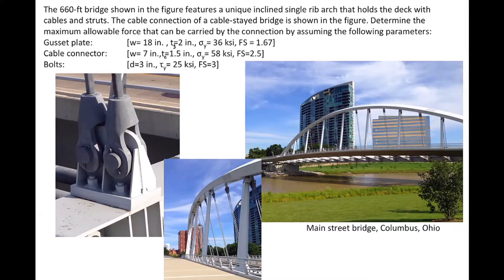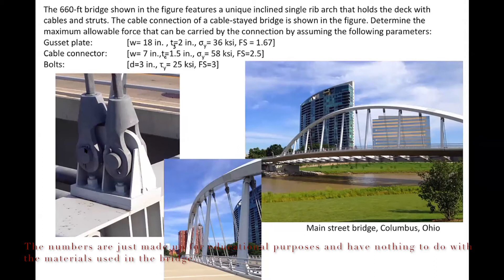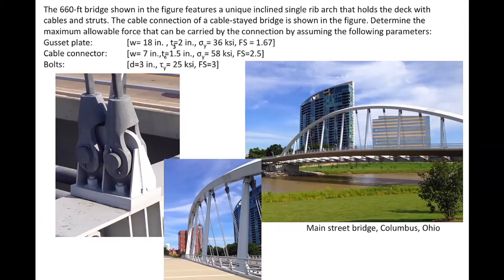Given these numbers — assuming the width of the gusset plate, the thickness, the diameter of the bolt, and some other properties are provided — how can we design this component using the concepts we have learned, including normal stress, shear stress, and the factor of safety?